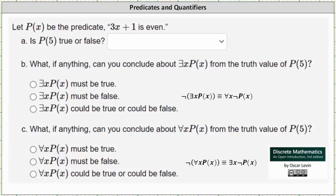Let P of x be the predicate 3x plus 1 is even. For part a, is P of 5 true or false?